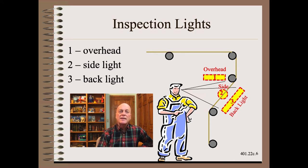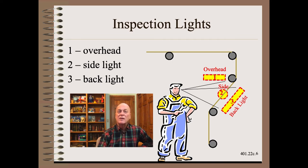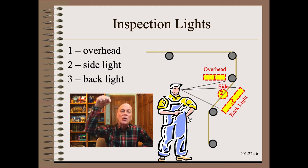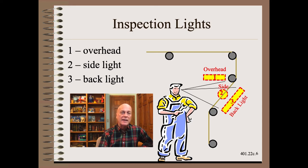Next, let's add side lighting, which might be most useful to inspect bagginess and other web flatness issues, especially if the operator views the web edge-on instead of straight-on. Sometimes the bagginess is best inspected with a light oriented along the web path and in the machine direction, and we will cover that technique in the next clip.